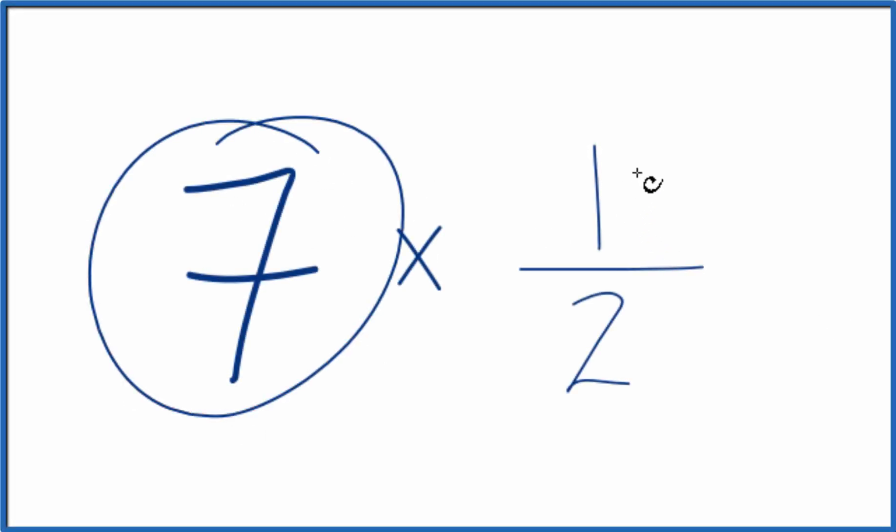Let's multiply 7 times 1 half, and here's how you could do that. First, you could just add 1 half together 7 times. That would give you the answer for 7 times 1 half.